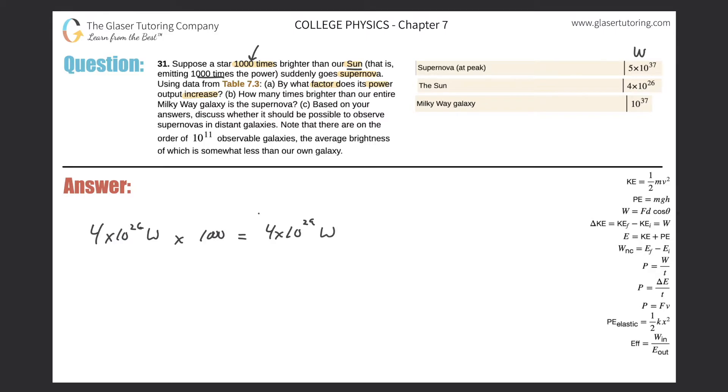So this is now the power produced by a sun that is 1,000 times brighter than our sun. So now we can find the factor that the power output increases if it goes supernova.